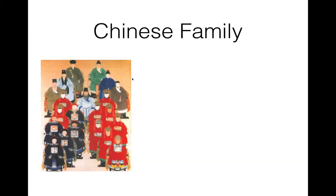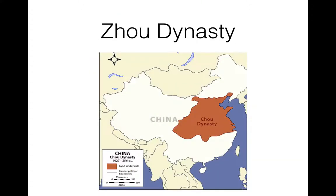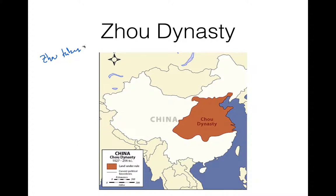Unfortunately, the Shang lose power, which happens to quite a few civilizations. The Zhou Dynasty then takes over, roughly in 1160 BCE — that's when they overthrow the Shang, though they don't really reach their peak of power until a little bit later.